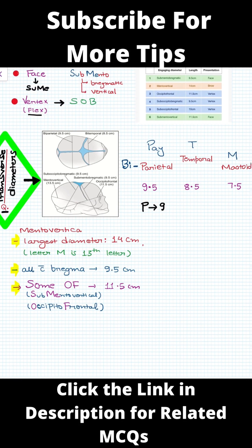Mentovertical is the largest dimension, which is 14 cm, and all the dimensions using bregma are 9.5 cm. We can see that over here. For some of the dimensions, sum is submentovertical.